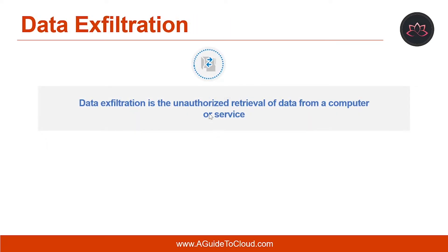Data exfiltration is the unauthorized retrieval of data from a computer or service. Once a network is compromised, an attacker can use a variety of techniques to move data out of your tenant. The data can be stolen through a breach of an account with access to data, or through a system and infrastructure attack that gives the attacker local or system admin privileges to computers that store data outside of Microsoft 365.